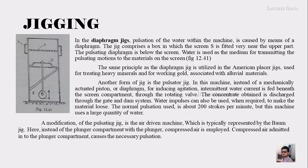A modification of the pulsating jig is the air-pulsion machine, typically represented by the Baum jig. Here, instead of a plunger compartment with a plunger, compressed air is employed. Compressed air admitted into the plunger compartment causes the necessary pulsation. These are the generalized types of jigs we covered. With this the class is over; if you still have any doubt you can discuss it in the class. Thank you.